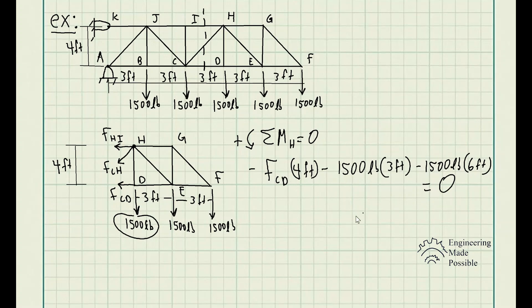And from here, we can actually solve the internal force of member CD. So it gives us negative 3,375 pounds of force going through member CD. Now, since we do have that negative, that means our assumption of it being in tension is incorrect. That means it's actually in compression. So let's go ahead and update this. This is the member CD in compression.